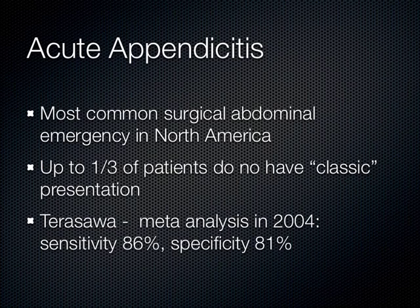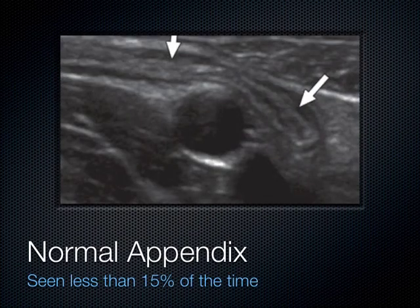A meta-analysis by Tarasawa found that in the hands of radiology, ultrasound had a sensitivity of 86% and specificity of 81% for appendicitis. The reason for its lower specificity is that we almost never see a normal appendix — I can only visualize it about 15-20% of the time. But seeing the abnormal appendix is actually pretty good, which is why the sensitivity is higher.